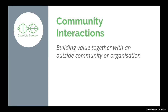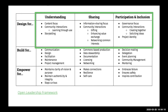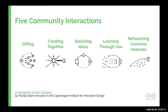Community interaction closely relates to the Mountain of Engagement. Think about five types of interaction: are we gifting something, creating something together, soliciting ideas, learning through use, or only networking around common interests — or perhaps all five at the same time. I'll leave a reference for you to read afterwards, and we'll give you an assignment for after the cohort call.